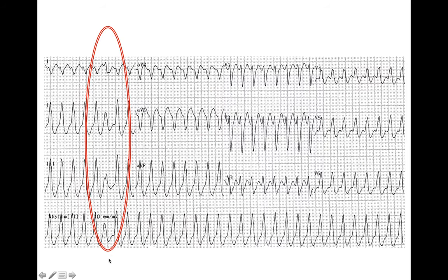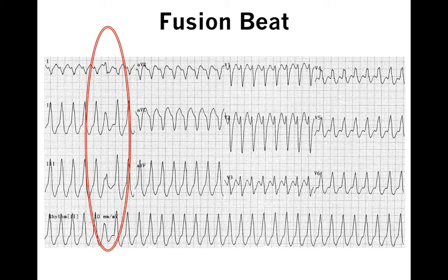This is an example where we have a wide complex tachycardia but there is a narrower complex right in the middle — this is an example of a fusion beat, which proves that this must be ventricular tachycardia. A fusion beat or capture beat is when one of the sinus beats makes it through the His-Purkinje system and either captures myocardium fully — giving a narrow QRS in the middle of the VT — or fuses with the wavefront of the VT to give a slightly narrower QRS. This proves that P waves are dissociated from the ventricular rhythm, confirming monomorphic ventricular tachycardia.